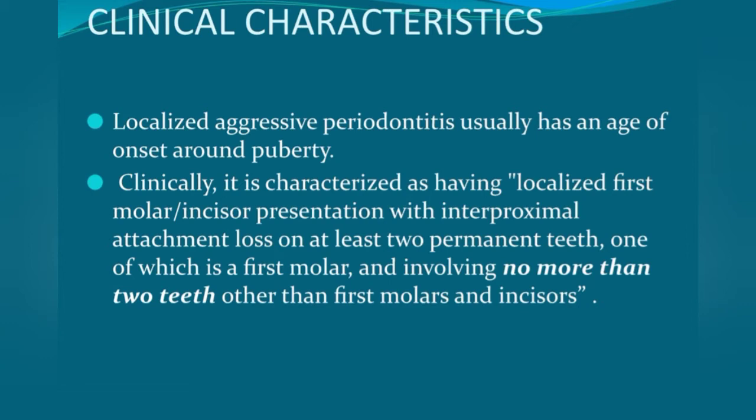Localized aggressive periodontitis usually has an age of onset around puberty. Clinically, it is characterized by localized first molar and incisor presentation with interproximal attachment loss on at least two permanent teeth, one of which is a first molar, and involving no more than two teeth other than first molars and incisors. This periodontitis is localized to first molars and incisors.